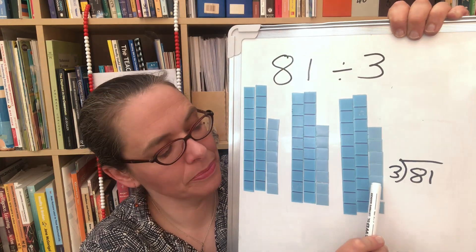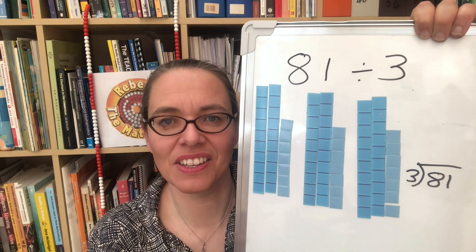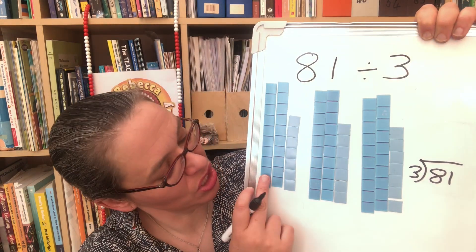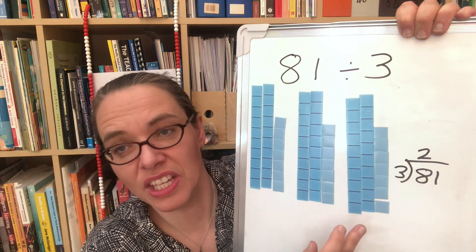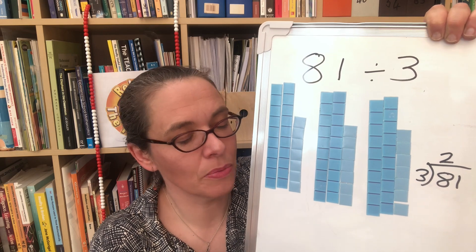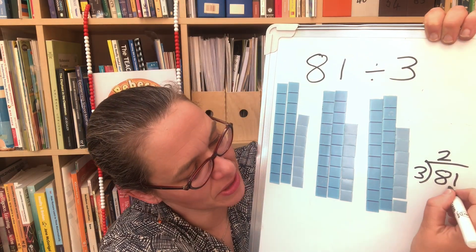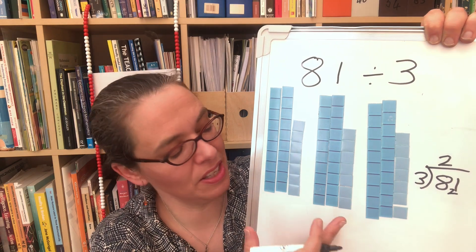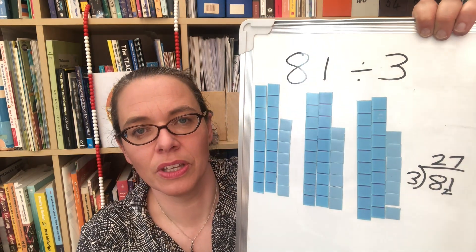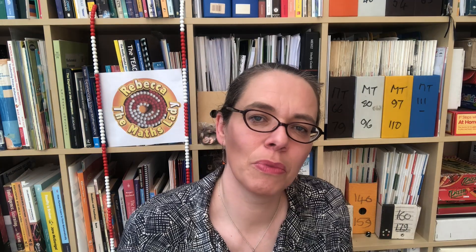Let's notate that: we're dividing 81 by 3. We had eight tens and we tried to share them into three equal groups. We could put two tens in each group, but the other two tens we couldn't share, so we needed to break them into ones — that gave us 20 ones to add to our one existing one, so 21 ones. We divided them into three equal groups and there were seven in each group, therefore our answer is 27. We want to do plenty of work with apparatus with children, connecting the apparatus with the notation.